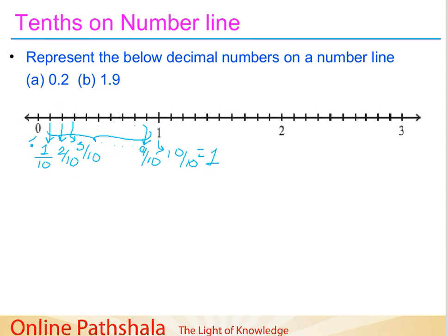The first part we can even say is 0. So here, this is 10 equal parts: 1, 2, 3, and so on — 10 equal parts.